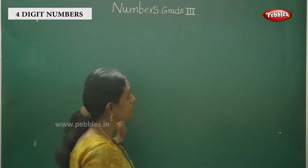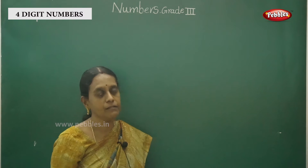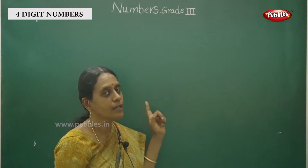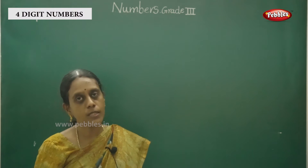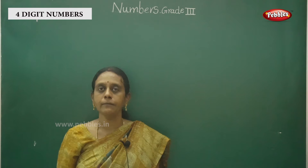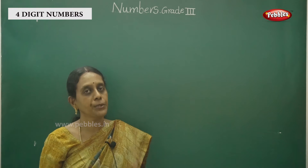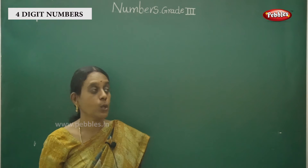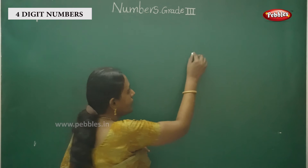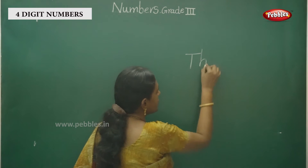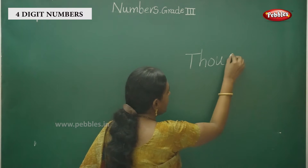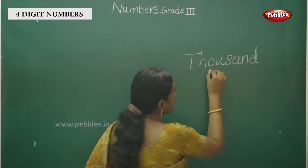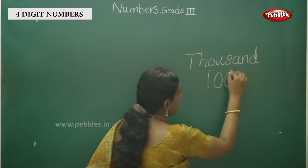So after 999, we stop at the number 1000. You have already learnt the spelling also. What is the spelling for 1000? T-H-O-U-S-A-N-D. That is 1000.